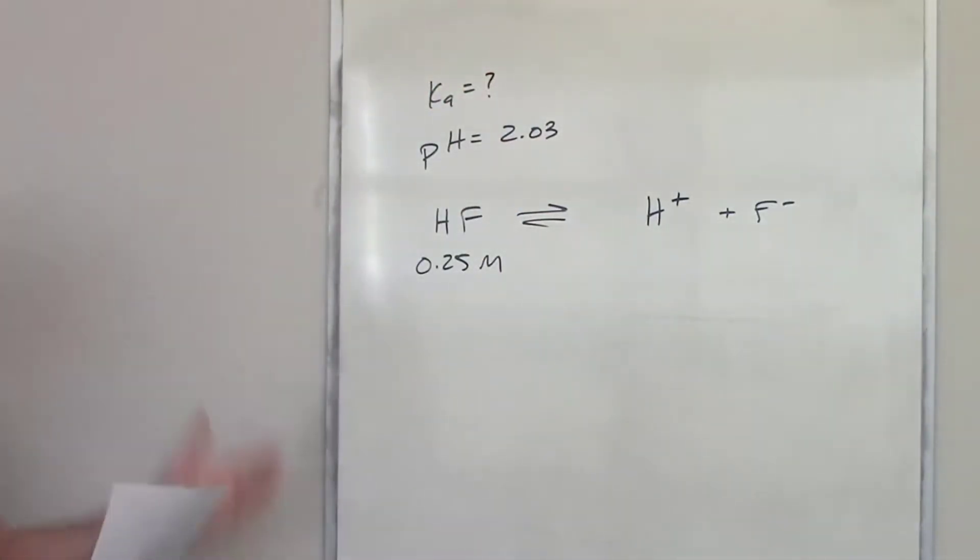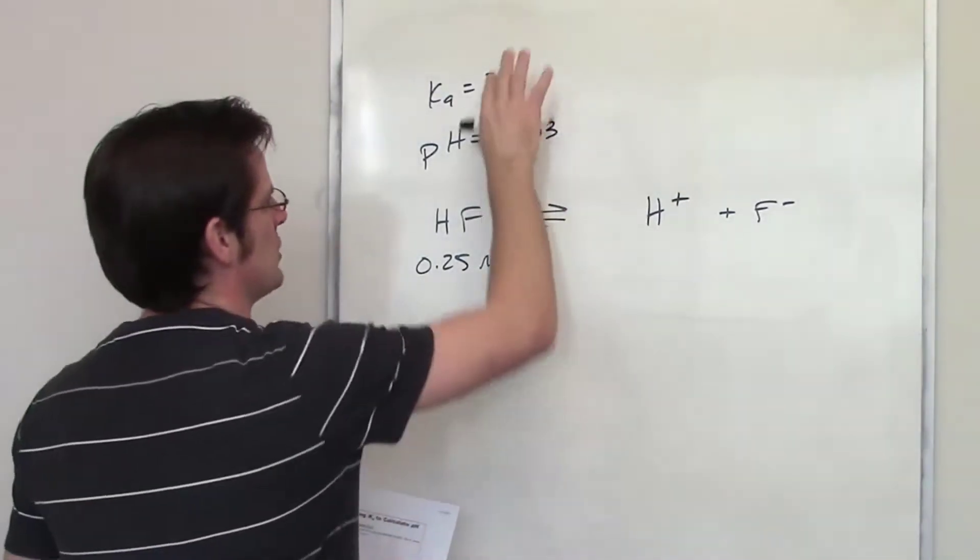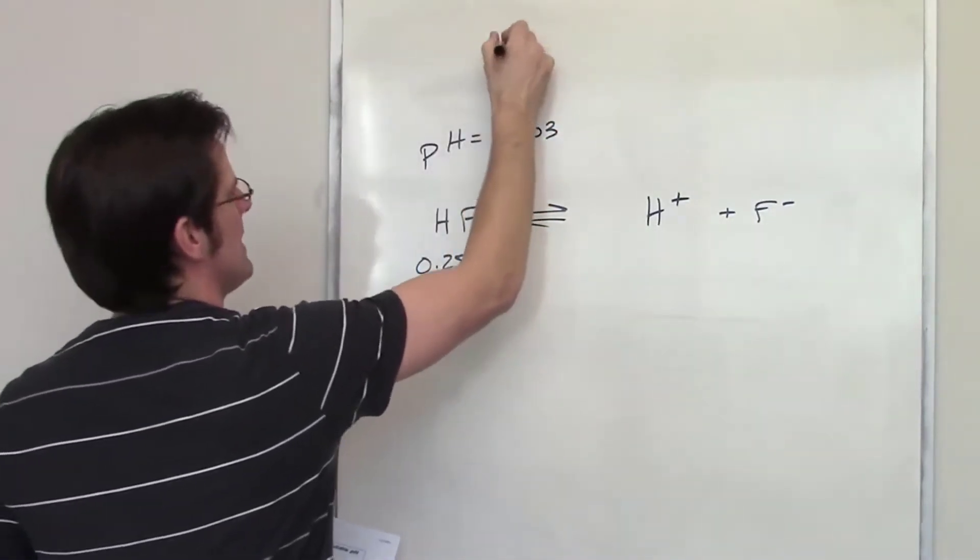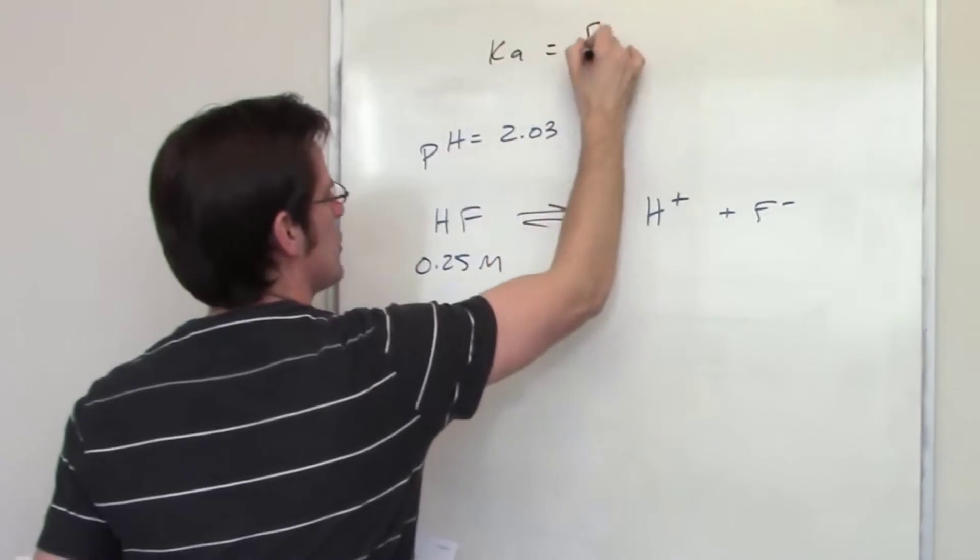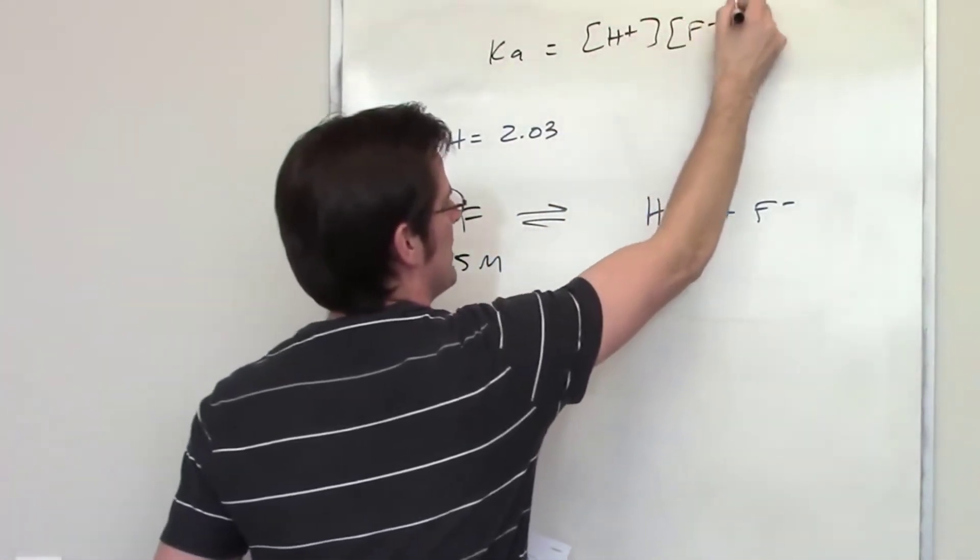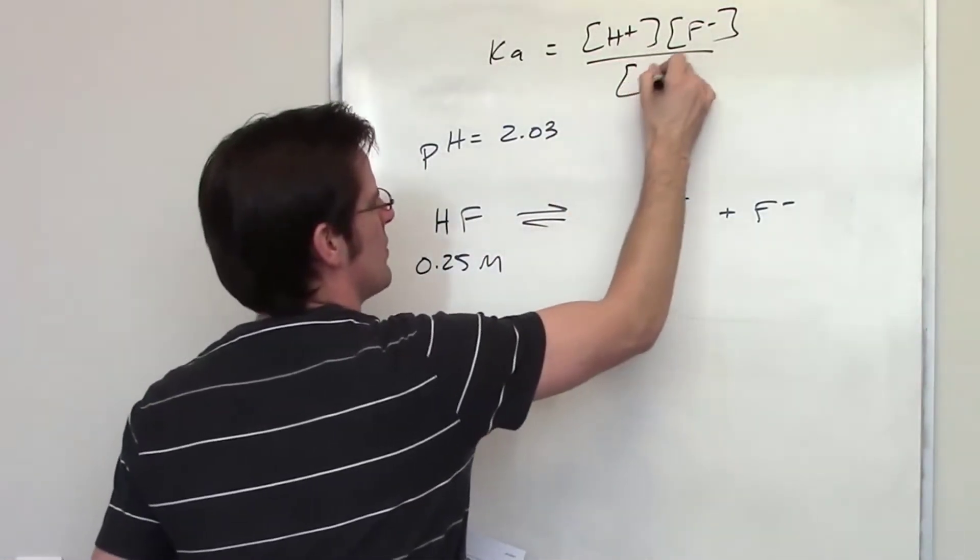Well, first things first, let's write out an expression for what Ka actually is going to be. Ka is going to be equal to the concentration or equilibrium concentration of H plus multiplied by the equilibrium concentration of F minus divided by the equilibrium concentration of HF. That's what Ka is going to be equal to.